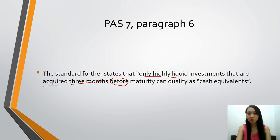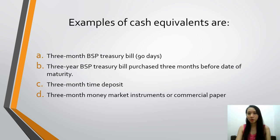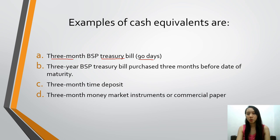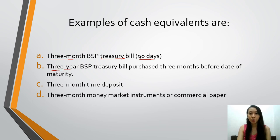These are the examples of cash equivalents. Three-month BSP treasury bill. I highlighted 'three months' again. In accounting problems, you may encounter either 'three months' or '90 days.' Beyond 90 days means it is no longer a cash equivalent. But there are some examples like the three-year BSP treasury bill, which was acquired — purchased — three months before the date of maturity. That fits the definition of cash equivalents.